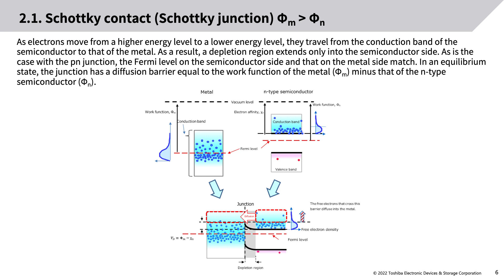As is the case with the PN junction, the Fermi level on the semiconductor side and that on the metal side match. In an equilibrium state, the junction has a diffusion barrier equal to the work function of the metal, Phi_M, minus that of the N-type semiconductor, Phi_N.